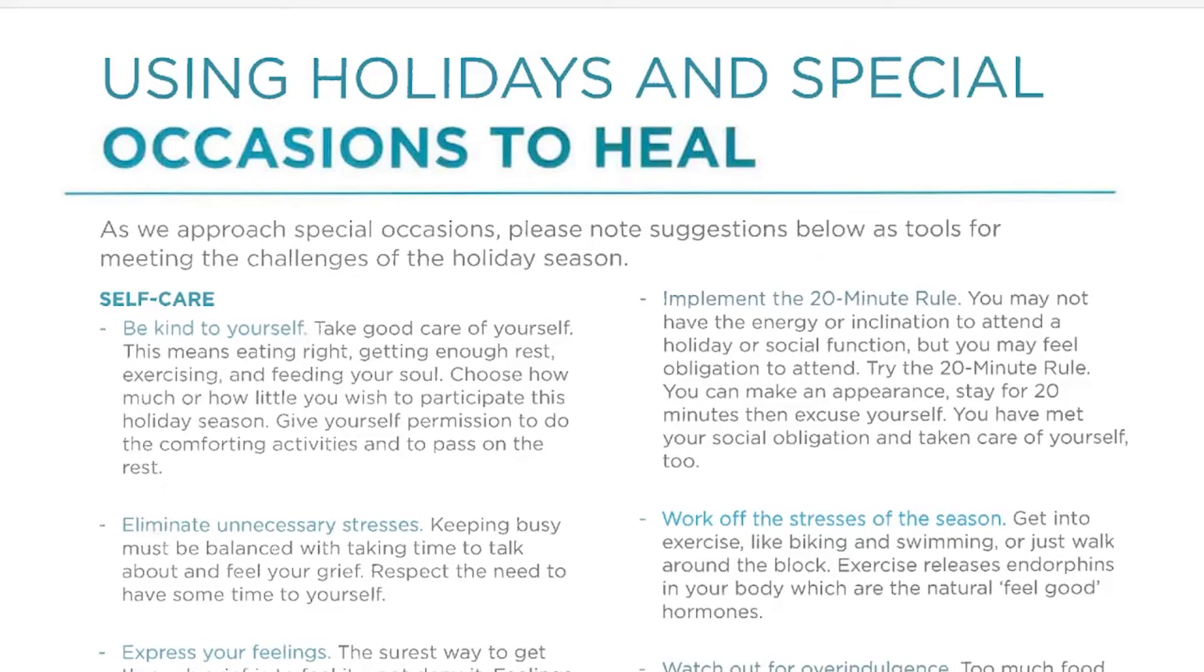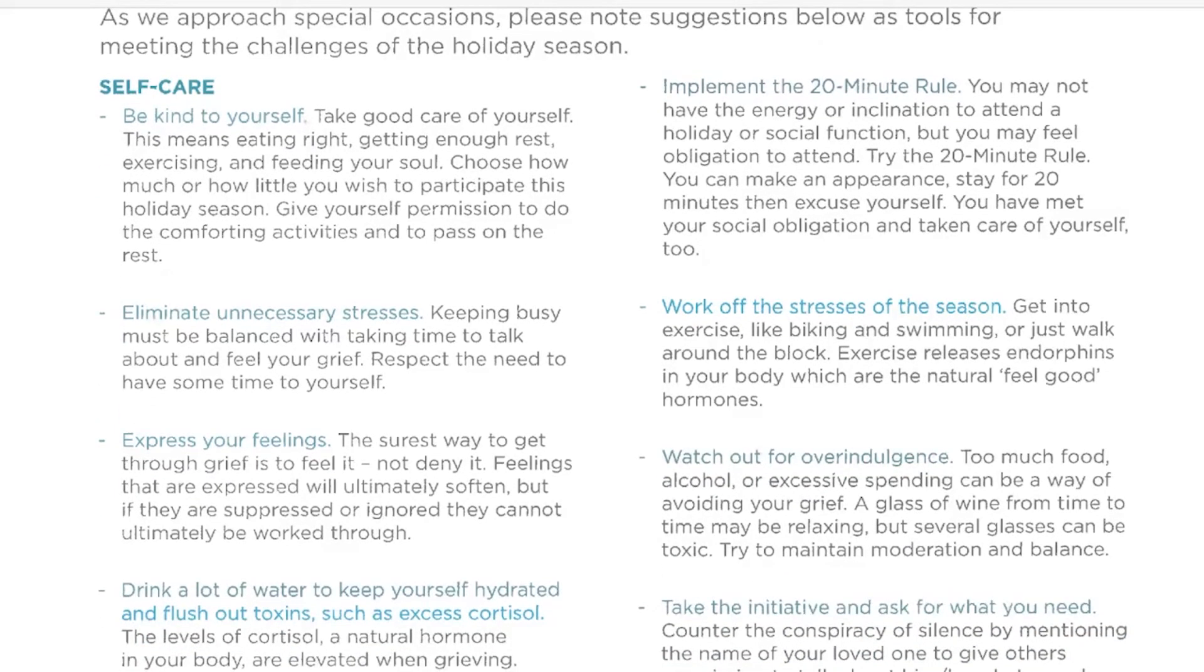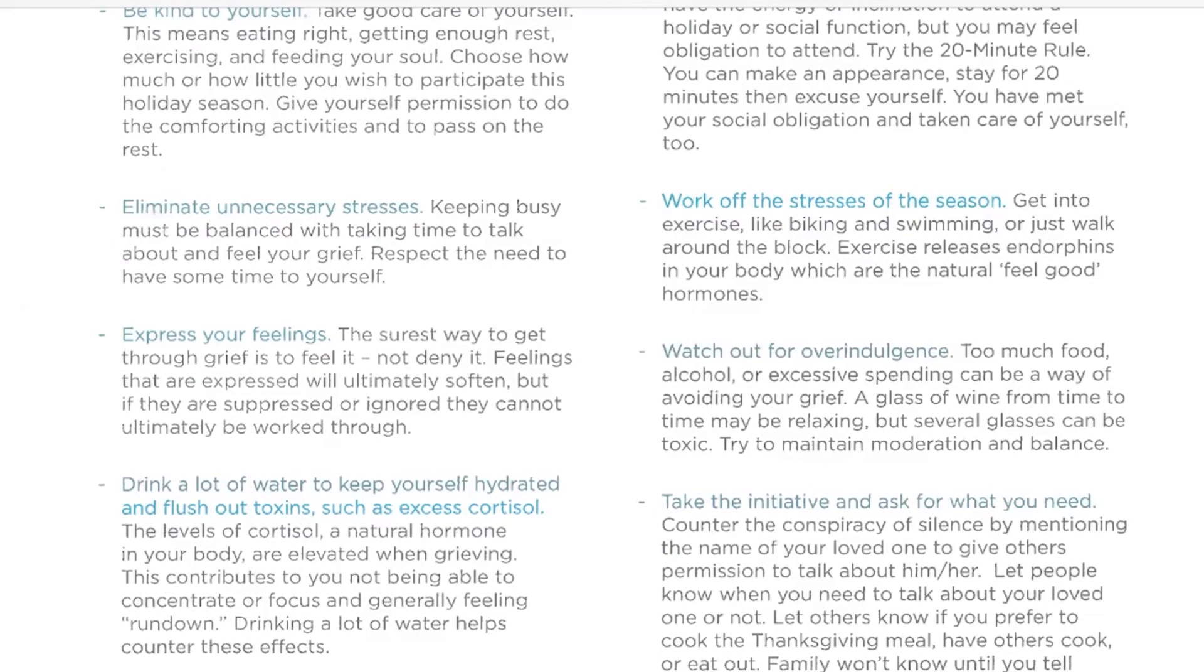It's really about planning. It's about thinking about the things that are going to be occurring that have happened in the past tradition-wise and what you choose to want to do that feels right and what you feel you might want to pass on this year and being okay with that and giving yourself permission. We want to eliminate unnecessary stresses. Keeping busy must be balanced with taking time to talk about and feel your grief. Respect that time to have that alone time, that time by ourselves. We want to allow ourselves to be around others and then be able to retreat as well in order to refuel ourselves. Express your feelings. The surest way to get through grief is to feel it. I'm going to say that again. The surest way to get through grief is to feel it and not deny it. Feelings that are expressed will ultimately soften.